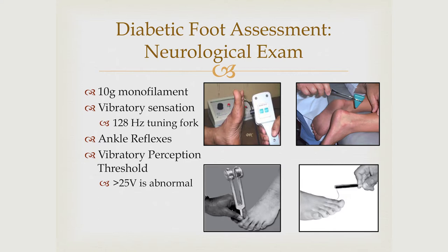For the neurological assessment, the 10-gram monofilament checks 10 different spots on the foot for the ability to feel pressure — a very good predictor of their level of neuropathy and the need to properly offload them. This is a biothesiometer, which vibrates at a particular level; greater than 25 volts is considered abnormal. Vibratory sensation is often what goes first, so that can be your first predictor of the development of neuropathy. Loss of ability to feel the monofilament generally comes after they've lost vibratory perception.